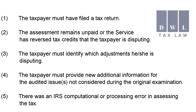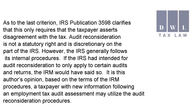4. The taxpayer must provide new or additional information for the audited issue or issues not considered during the original examination. 5. There was an IRS computational or processing error in assessing the tax. IRS Publication 3598 clarifies that this last criterion only requires that the taxpayer asserts disagreement with the tax.